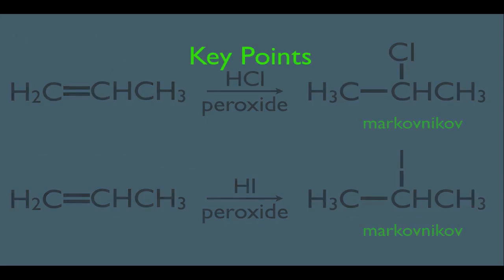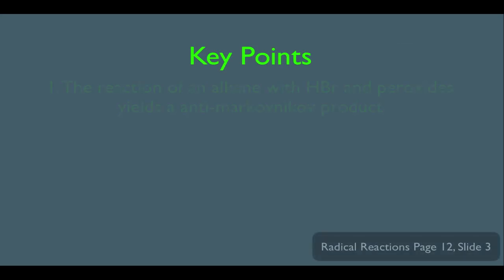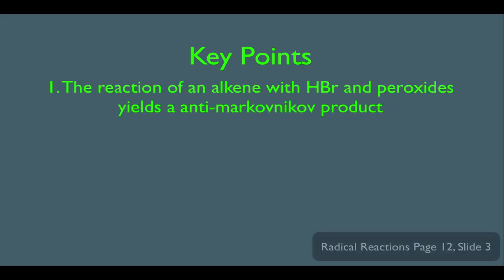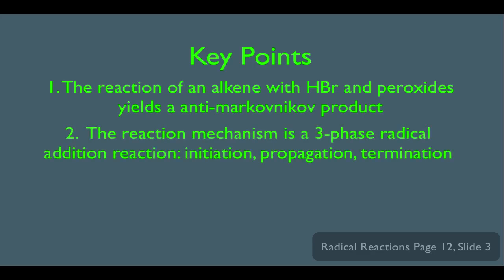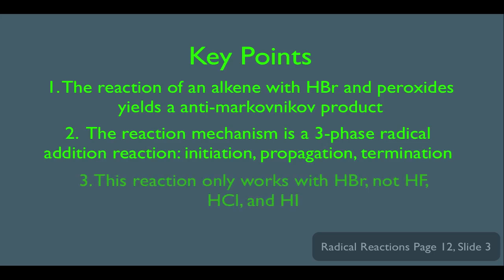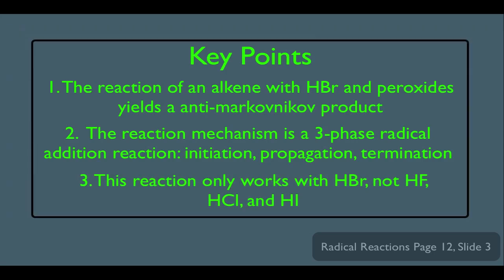So what have we learned? Key points: number one, the reaction of an alkene with HBr and peroxides yields an anti-Markovnikov product. Number two, the reaction mechanism is a three-phase radical addition reaction — initiation, propagation, and termination. And number three, this reaction only works with HBr, not HF, HCl, or HI.